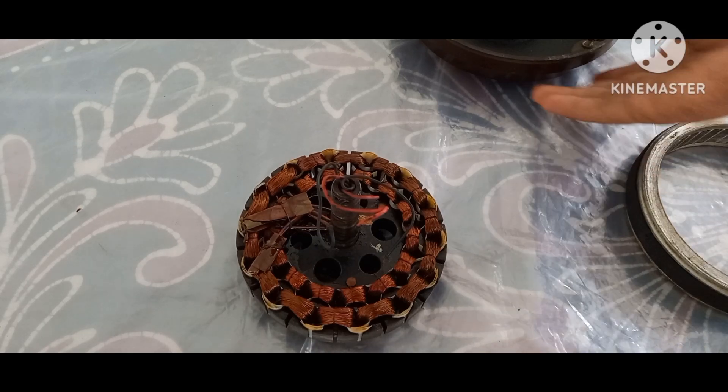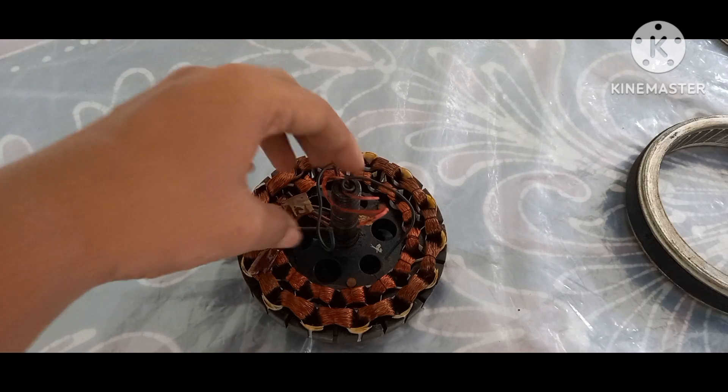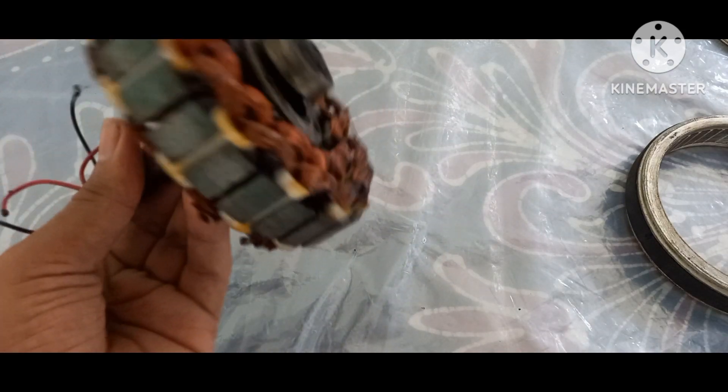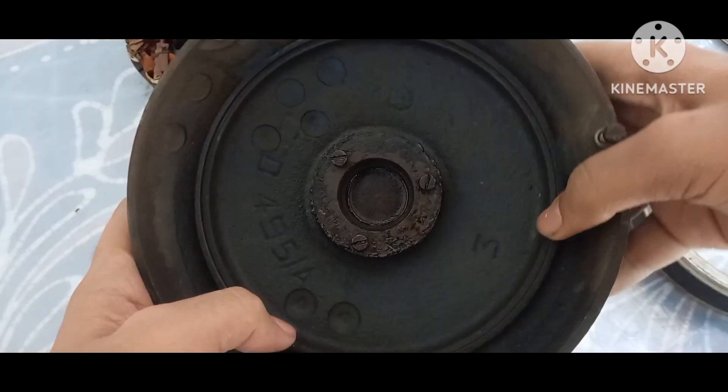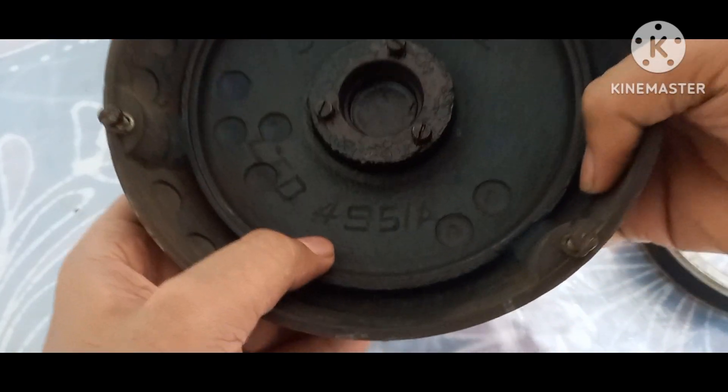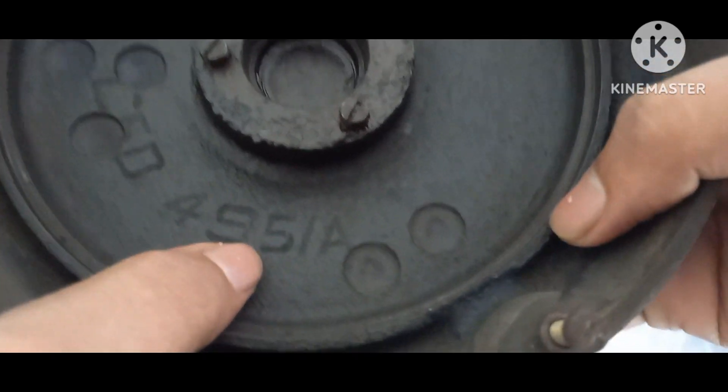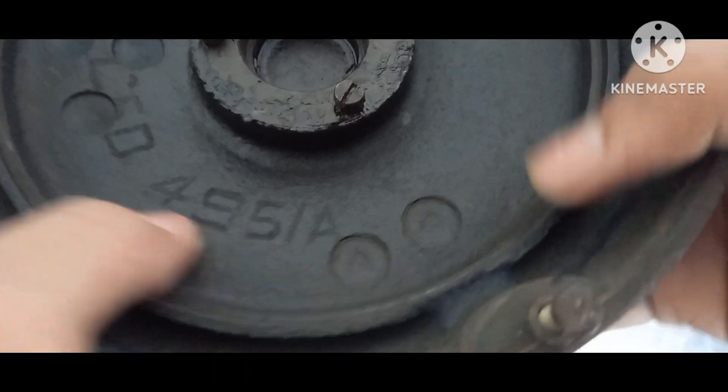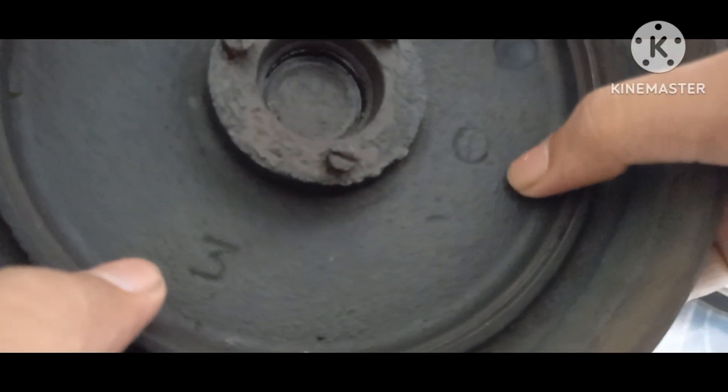Don't know what year it is, but I'm sure it's 20 plus years old. Still, the rewinded coil is in good condition, no worries. This is the bottom cover, which is having a bearing seat, and it's written 4951A.